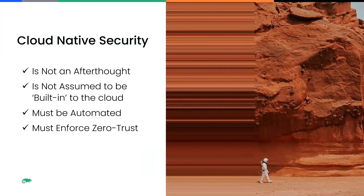The key thoughts and takeaways for cloud-native security: it cannot be an afterthought. You shouldn't think about it as something you do after the application is developed — it needs to be built in as applications are being developed. Do not assume it's built into the cloud; it's really part of the application development process and it must be automated. To truly get full cloud-native security, you want to take full advantage of and enforce zero-trust methodologies. Get in touch with us at SUSE and we'd be glad to dive into the details of how we accomplish cloud-native security in your environment.